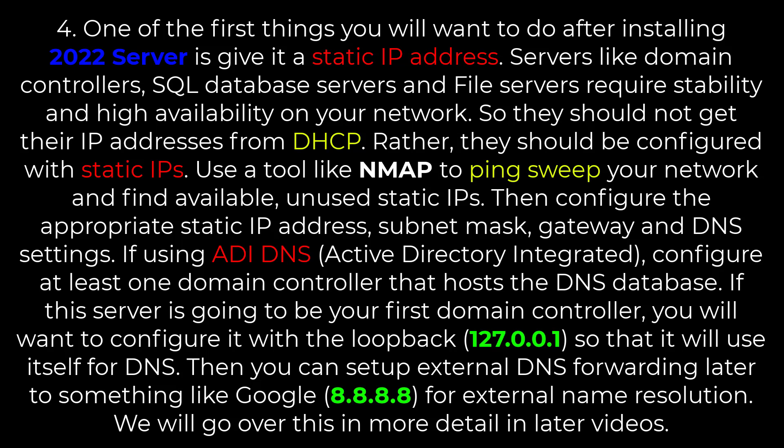If this server is going to be your first domain controller, you will want to configure it with the loopback address 127.0.0.1, so that it will use itself for DNS. Then you can set up external DNS forwarding later to something like Google's 8.8.8.8 for external name resolution. We will go over this in more detail in later videos.